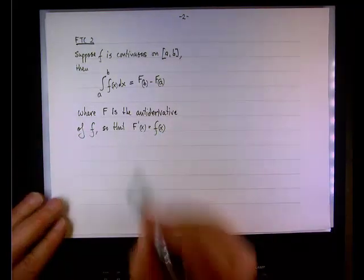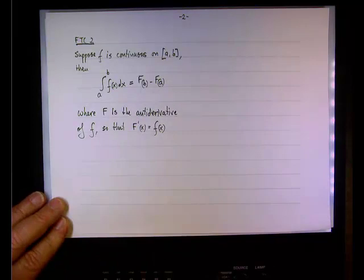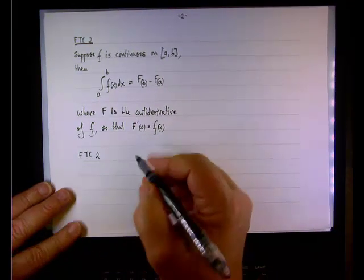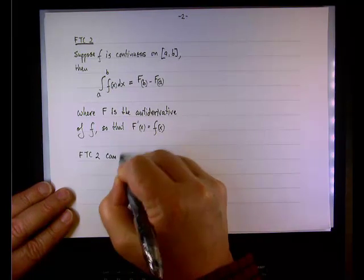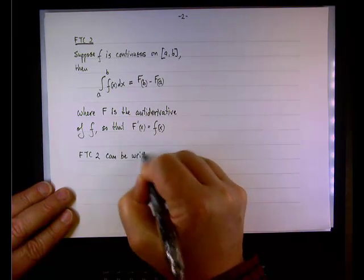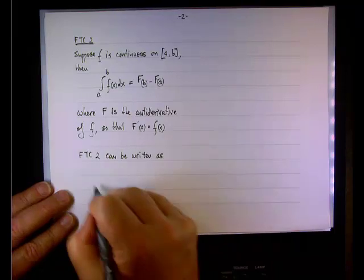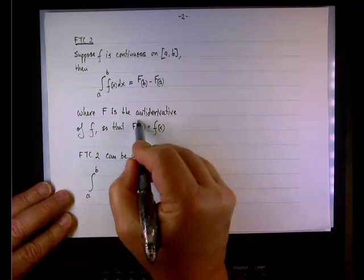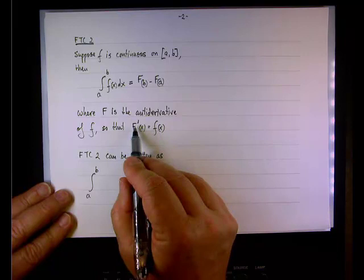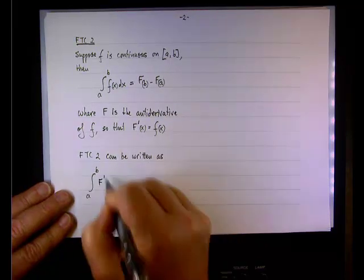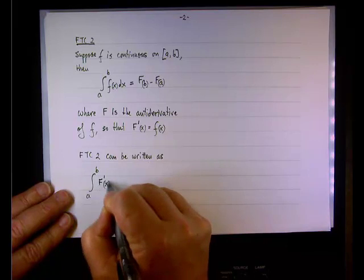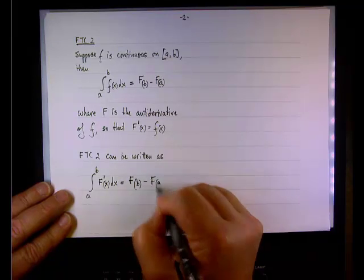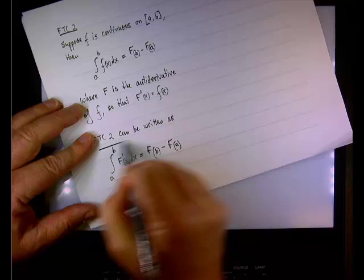So that if we take the derivative of F uppercase, we get lowercase. Now, we can write it in order to eliminate the need to use F lowercase, F uppercase. We can write the FTC 2 in the following manner. Instead of using the integrand F lowercase, since I established the fact that F uppercase prime is F lowercase, I'll simply write the integrand as F prime of x dx, and the result is F of B minus F of A. And this is a more convenient form. So I'll go ahead and frame it.